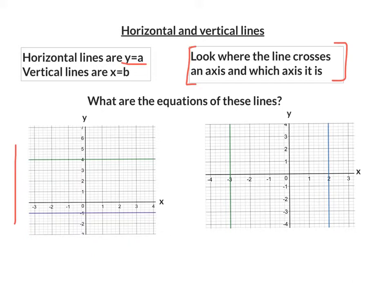So the green line here crosses at 4 and it crosses the y axis at 4. So that's the line y equals 4. The purple line crosses the y axis at negative 1. So that's the line y equals negative 1.